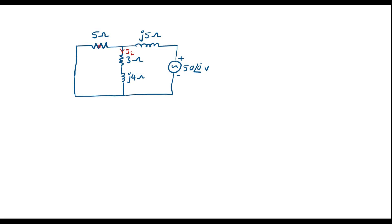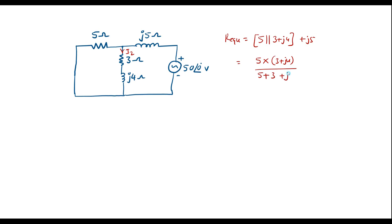Now again I will follow the same method. Here 3+j4 is in parallel with 5 ohm, and that combination is in series with j5. With that we will find the R equivalent — the total resistance of the circuit. That is: 5 in parallel with (3+j4), and this whole combination in series with j5. So this is nothing but (5)(3+j4)/(5+3+j4) + j5. This simplifies to 2.5+j1.25+j5, giving 2.5+j6.25. So this is the total resistance of the circuit.